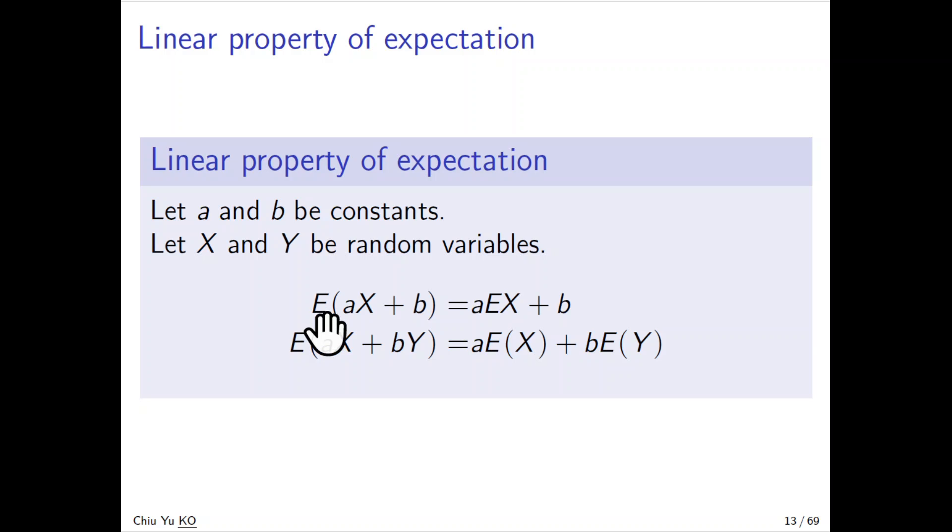The first property is E(aX + b), where a and b are constants, can be taken out of the expectation, so it's aE(X) + b. This greatly simplifies a lot of calculations. Why is this true? Because expectation is summation, and this basically follows from the summation property.